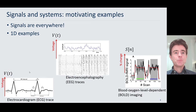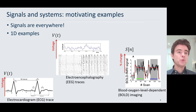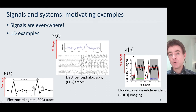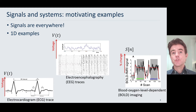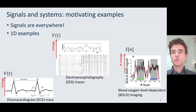Here we have a few examples. On the left we have an ECG trace, that's for looking at the heart, and what you'll measure there will be a voltage V that varies with time, and so that's what's shown on this trace. Or, in a similar fashion, we could look at the brain and do an EEG, and so there we get a set of traces, which are again voltages as a function of time T. So that's two examples of 1D signals.